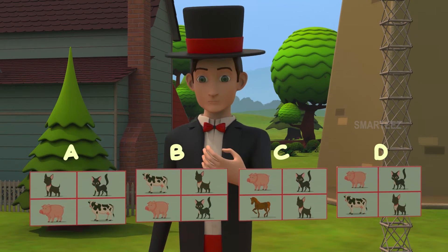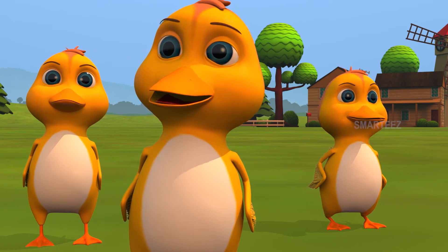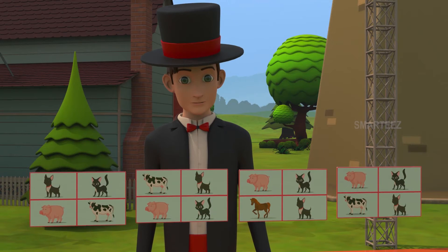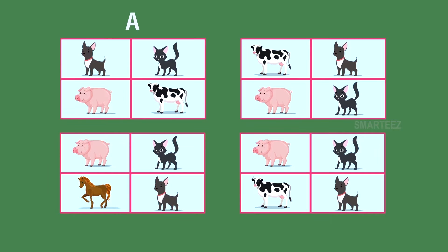But which animal was different in this picture? It's the horse. That animal is not found in other pictures. Exactly. Let's give a big round of applause. Pictures A, B and D had the same animals — namely, cat, dog, cow and a pig — even though they were not in the same order. But picture C had a different animal, namely horse. So that's the picture which is different.